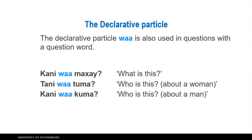'Who is this' has two different forms: a feminine form and a masculine form. We need to consider whether the person we're asking about is a woman or a man, and use the appropriate form. In the feminine: 'kani wa tuma', and in the masculine: 'kani wa kuma'. The consonants 't' and 'k' very frequently mark feminine and masculine gender in Somali.